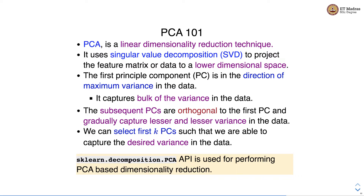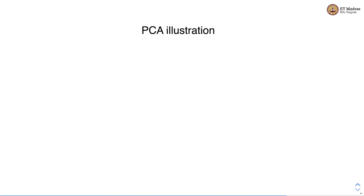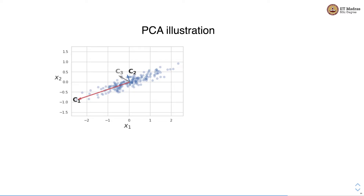The sklearn.decomposition.PCA API is used for performing principal component analysis based dimensionality reduction. Let's illustrate PCA through an example. On your screen you see a training dataset with two features x1 and x2, and the data points are the training samples in the feature space bounded by x1 and x2.